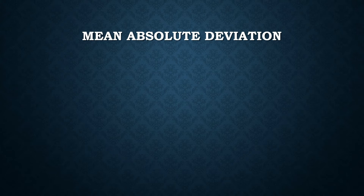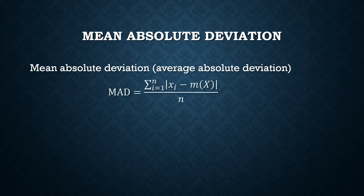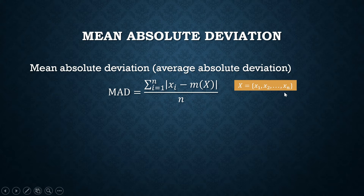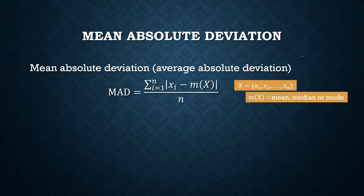We have another measure of dispersion called the mean absolute deviation, or MAD, also called the average absolute deviation. In the formula, m(x) stands for a measure of central tendency of the set — it can be the mean, the median, or the mode. We get the absolute value of the difference between that central tendency value and each element in the set, sum them all, and divide by n.